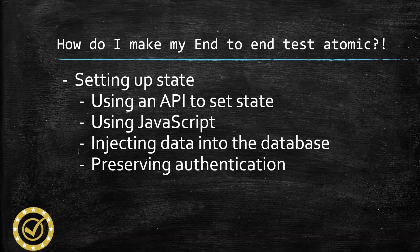A few examples: you could use an API. API requests take milliseconds, and you could do something like submitting a request that sets up all the data and loads your app into the state you want via the post-response API request. You could also use JavaScript to set the state of an application — some JavaScript code that would log you in, refresh the page, without using the UI interface. Another popular way is injecting and seeding test data into a database.